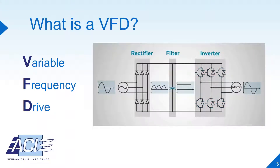However, the inverter output is not a true AC sine wave, but rather an approximation since the switches convert the DC voltage into fast voltage pulses of constant magnitude and varying width through a process called pulse width modulation.